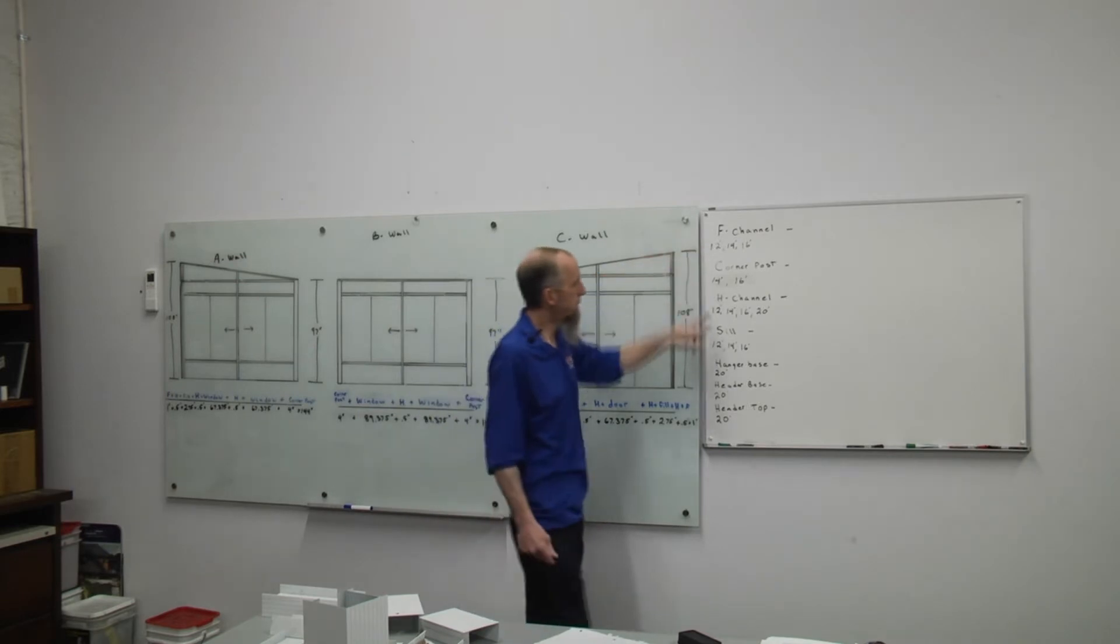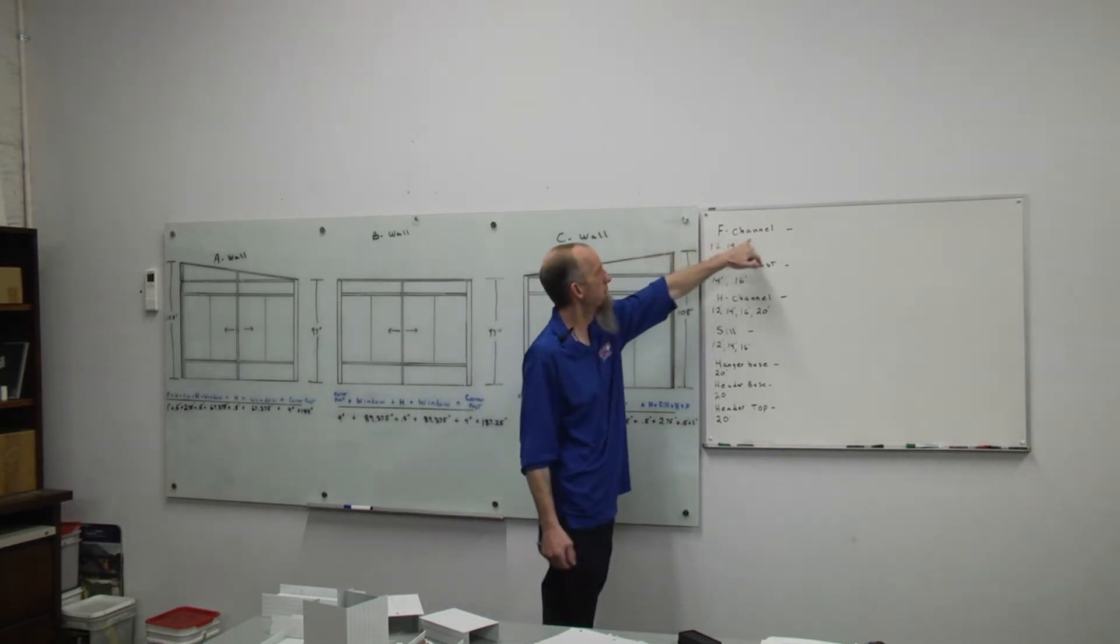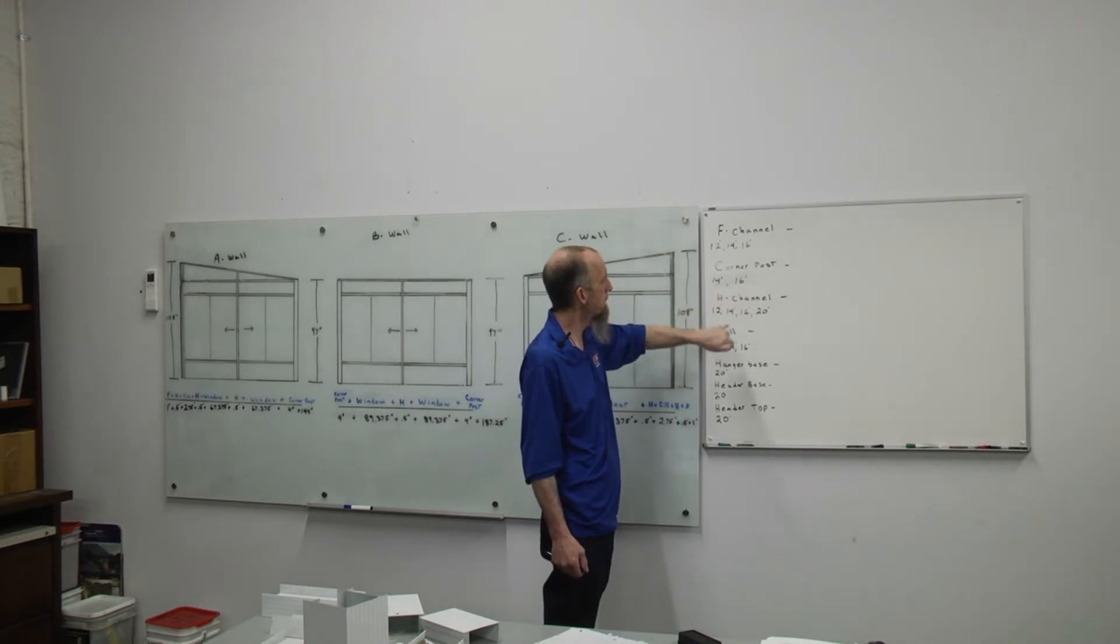I have our channel listed out over here with our lengths. Our F channel is going to come in lengths of 12, 14, and 16 foot. Corner posts come 14 and 16.